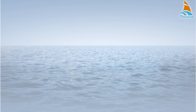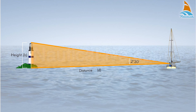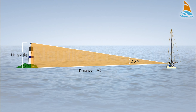A fix can also be obtained by combining a compass bearing and a distance of the same lighthouse. You can determine the distance knowing the height and the vertical sextant angle of the lighthouse.